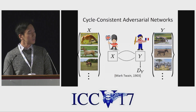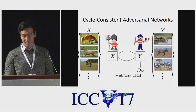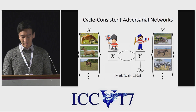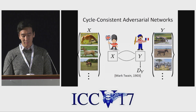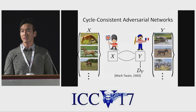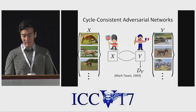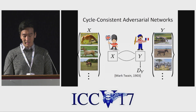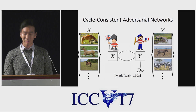Here, we propose to use the cycle-consistency constraint, in the sense that if we translate a sentence from English to French and then translate it back from French to English, we should get the same original sentence — as famously noted by Mark Twain.